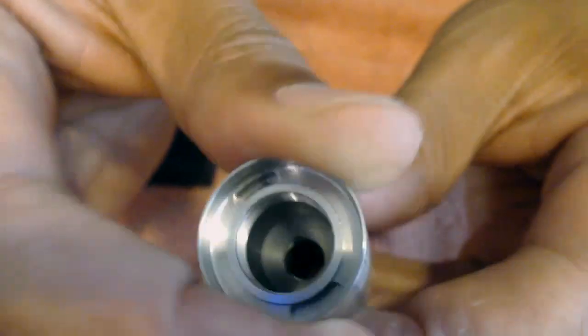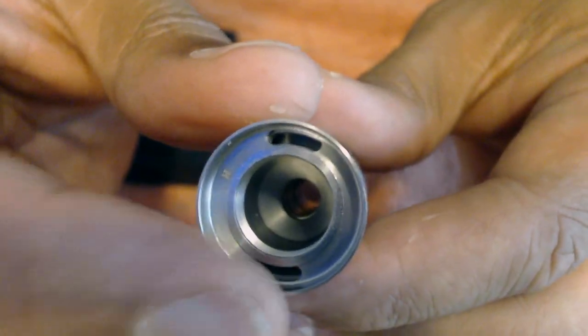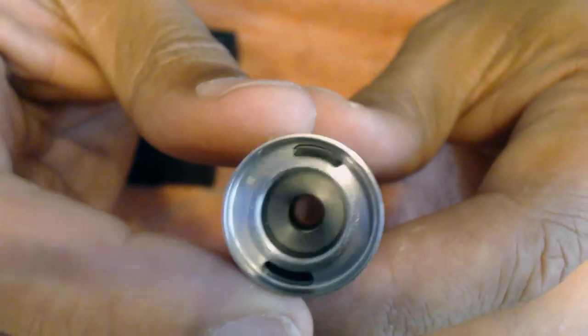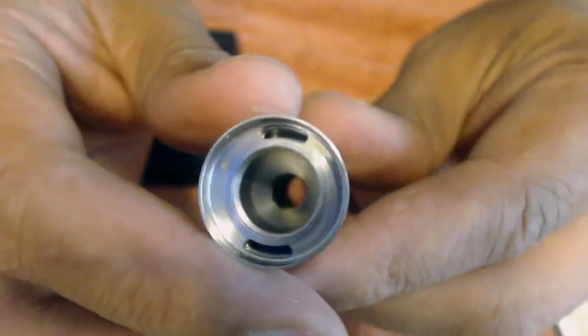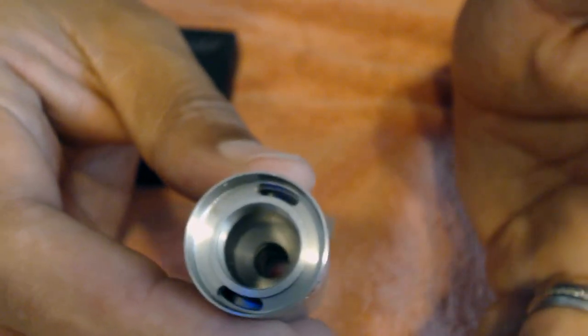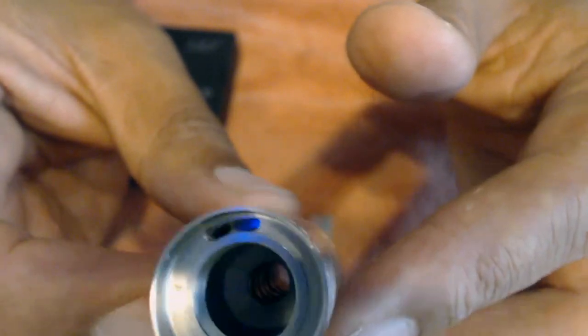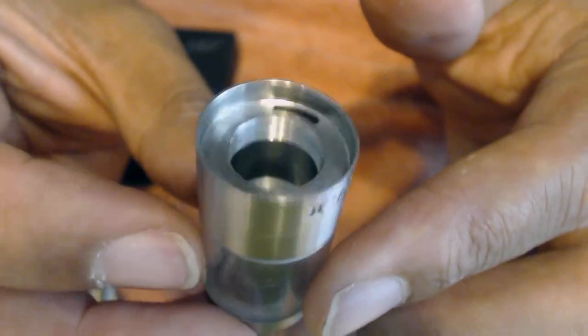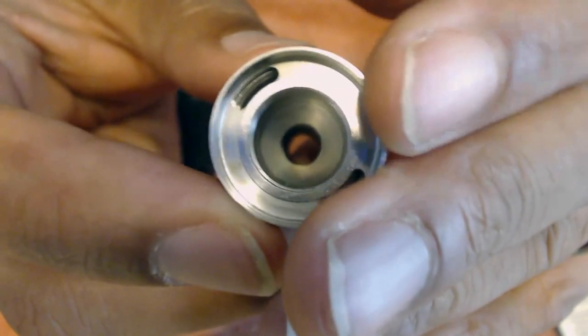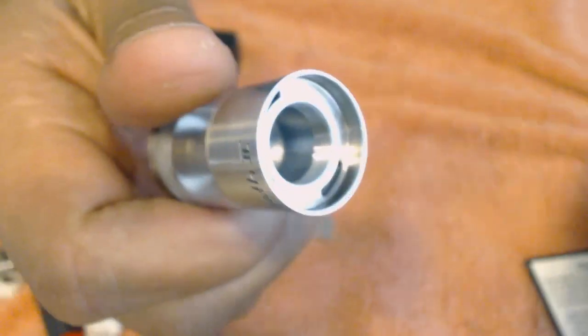To fill it, what you would do is you would spin it until it's open, like so, and proceed to fill one side, and the air would escape from this side.